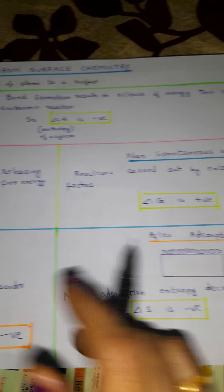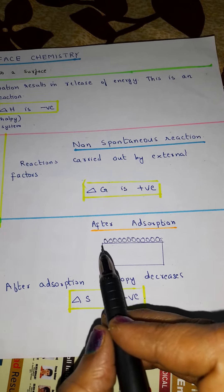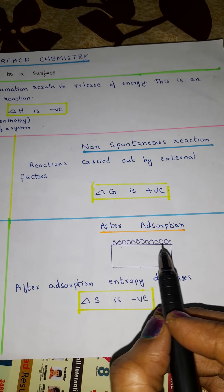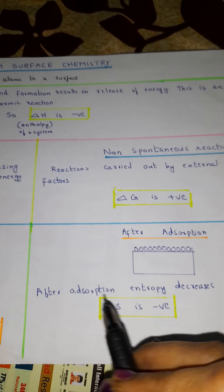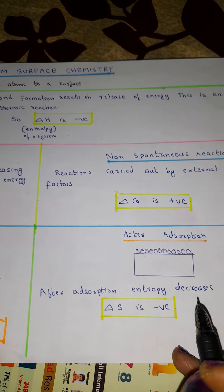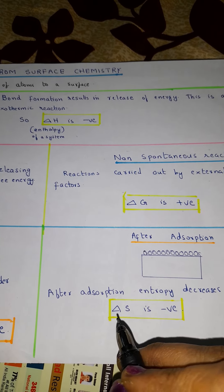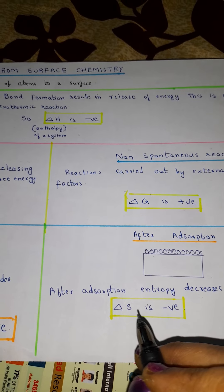Now suppose after adsorption, you can see that the molecules are arranged neatly here. So after adsorption, what happens? Entropy will decrease. So delta S, change in entropy, is negative.